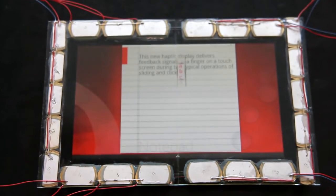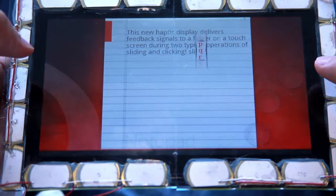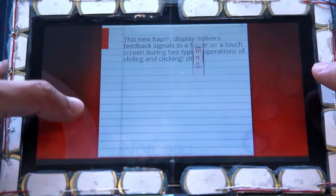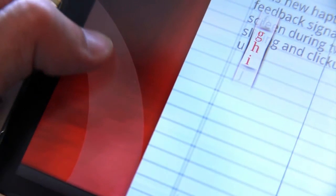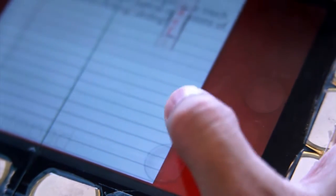The second demo incorporates sliding and clicking haptic feedback into a thumb typing scenario. The left thumb moves up and down along an arc in the lower left corner of the touch screen. This is mapped to three letters in a vertical alphabet display. The user selects the desired letter with the right thumb.